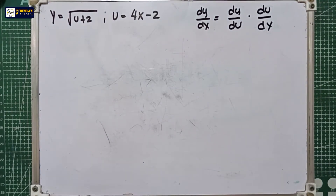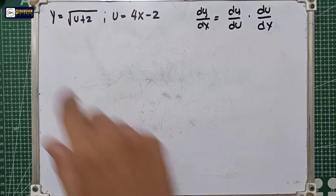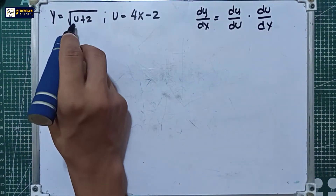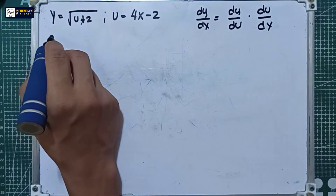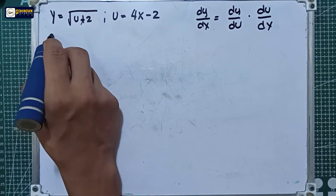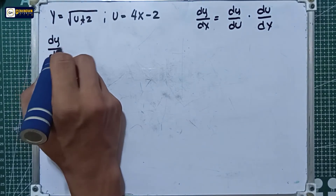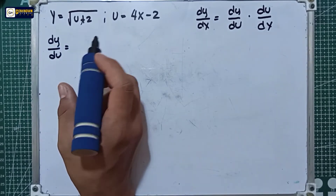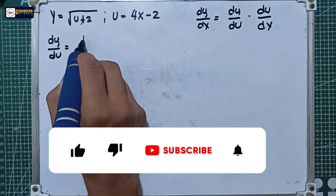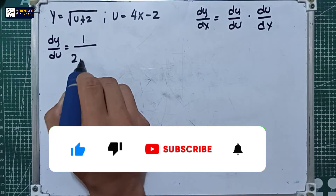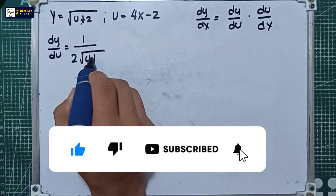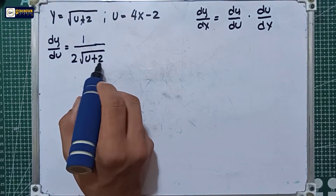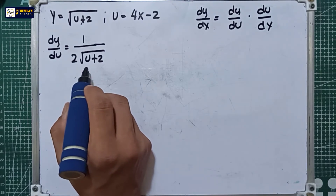We will derive the first equation — the y equation — with respect to u. So dy over du is equal to the derivative of the square root of u plus 2, which equals 1 over 2 times the square root of u plus 2, multiplied by the derivative of u plus 2.